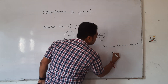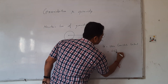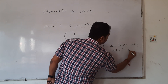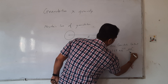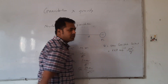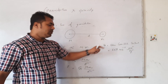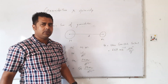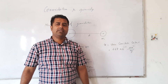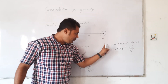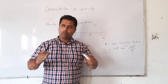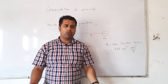What is its value? The value of G is 6.67 times 10 to the power minus 11 Newton meter squared per kilogram squared. This is called the Universal Gravitational Constant, and its value is the same all over the universe.